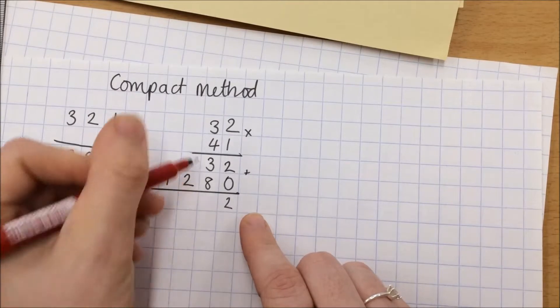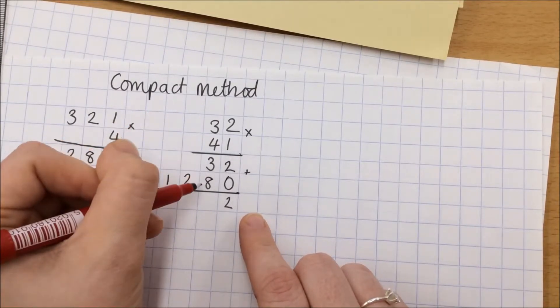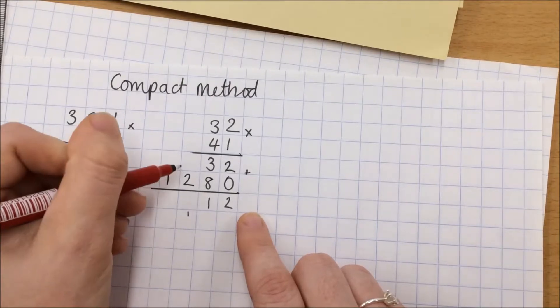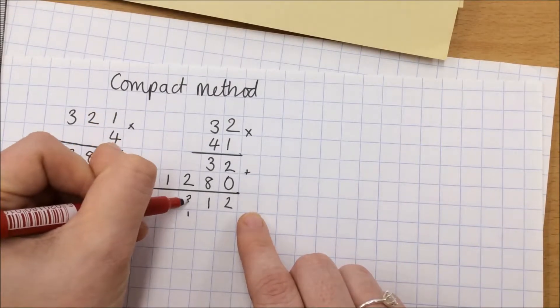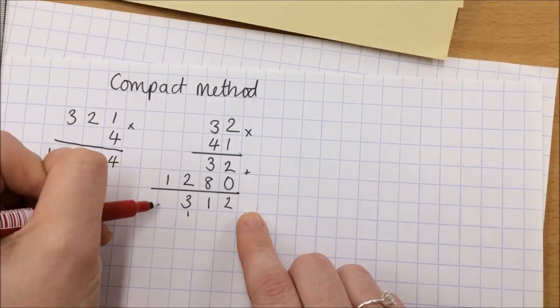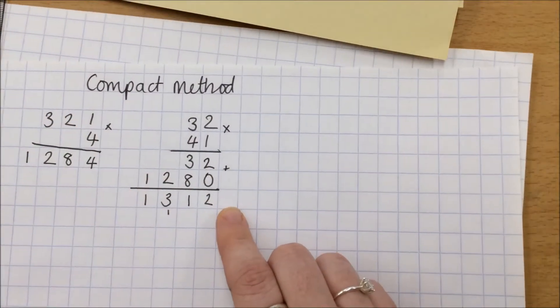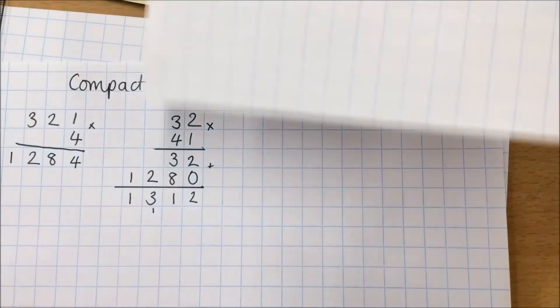2 plus 0 is 2. 3 plus 8, or 3 tens plus 8 tens is 11 tens. 2 plus 1, or 200 plus 100 is 300, and 1000 plus nothing is 1000. So 32 multiplied by 41 is 1312, and you can see how I can put those underneath each other.